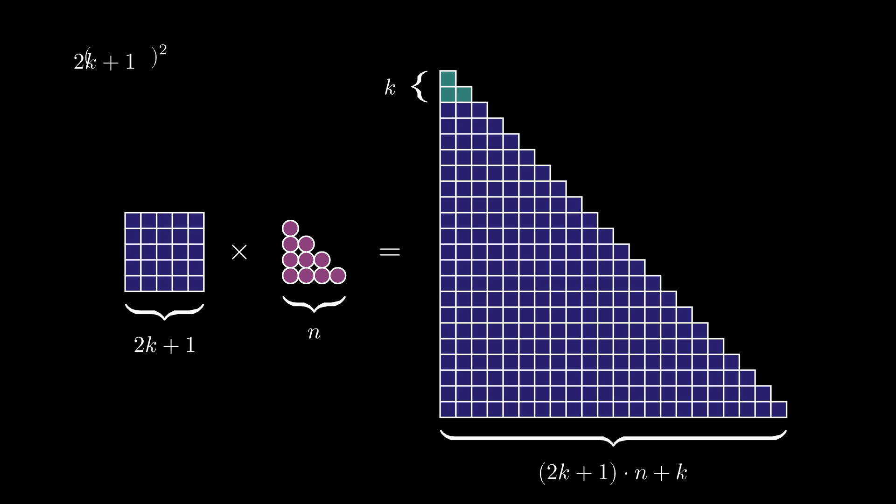Therefore, we see that 2k plus 1 squared multiplied by the nth triangular number t sub n is given by the 2k plus 1 times n plus k triangular number minus the kth triangular number t sub k. Therefore, the product of an odd square and a triangular number is the difference of two triangular numbers.